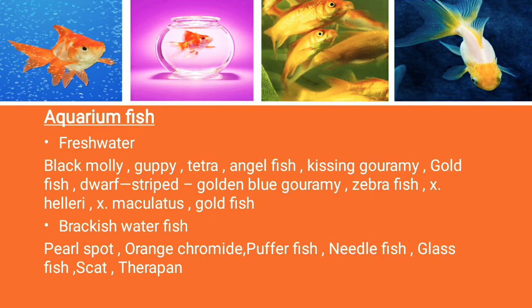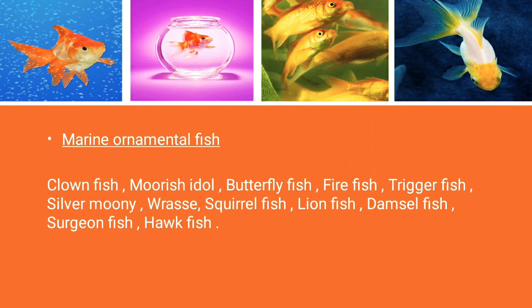Freshwater ornamental fishes include: black molly, guppy, tetra, angelfish, kissing gourami, goldfish, dwarf gourami, striped or golden blue gourami, zebrafish, Xiphophorus helleri, and Xiphophorus maculatus. Brackish water fishes include: pearl spot, orange chromide, pufferfish, needlefish, and glassfish. Marine ornamental fishes include: clownfish, Moorish idol, butterflyfish, firefish, triggerfish, silver moony, rays, squirrelfish, lionfish, damselfish, surgeonfish, and hogfish.